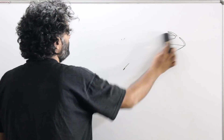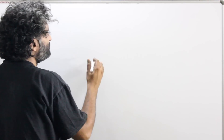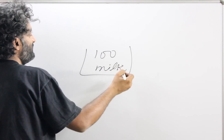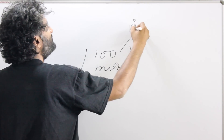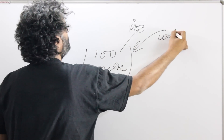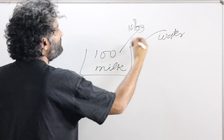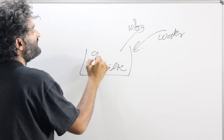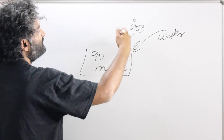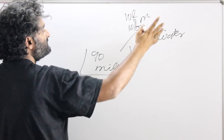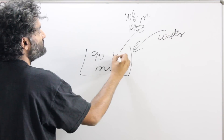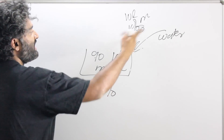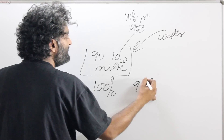Start with 100 liters of pure milk. Remove 10% from it and put back water. Removing 10% leaves 90 liters of milk — 10 liters of milk is thrown away — and the same 10 liters of water is put back. Initially milk percentage was 100%. After this process, milk percentage is 90%.